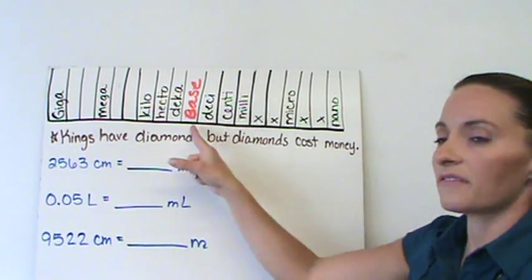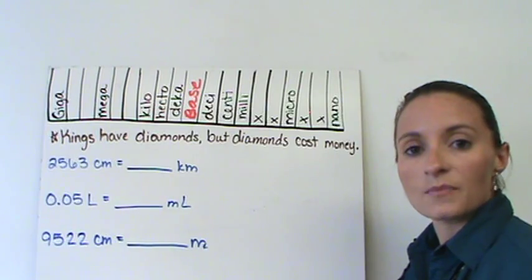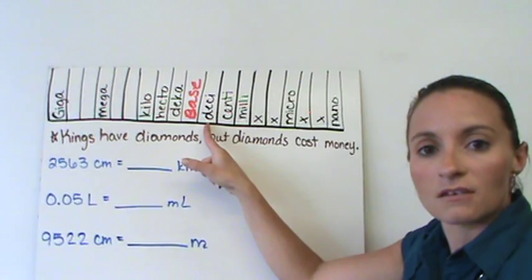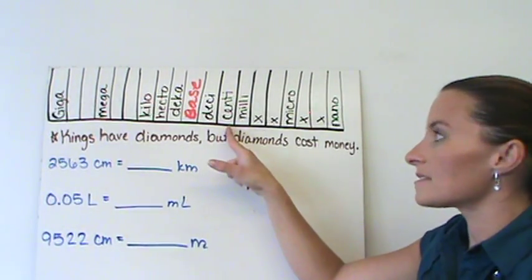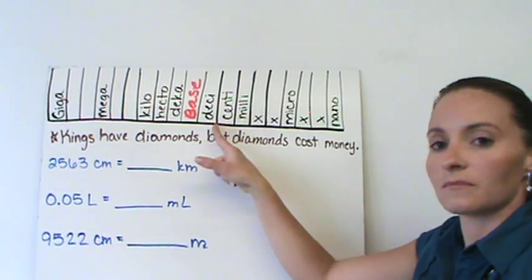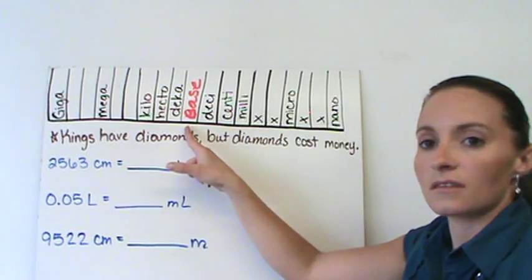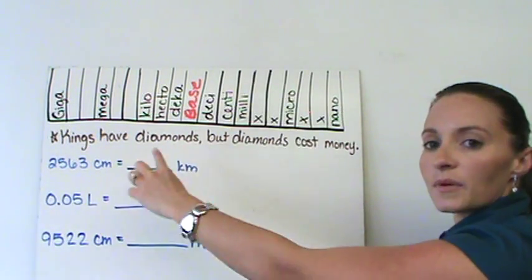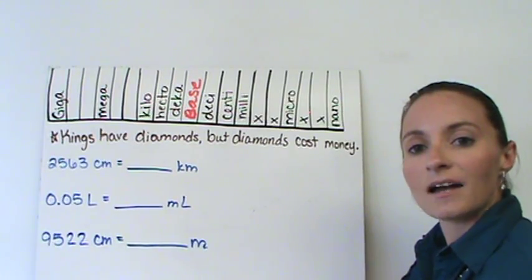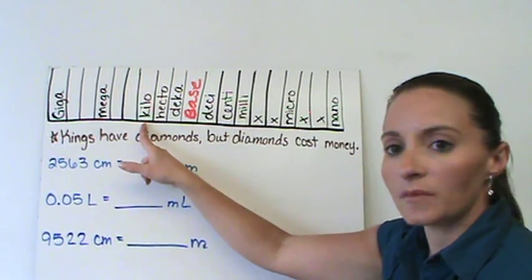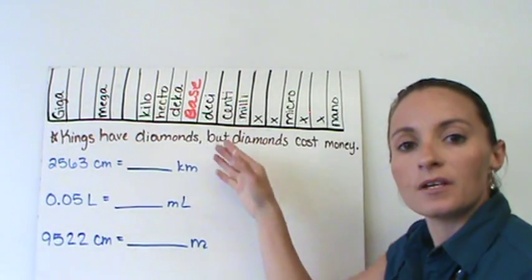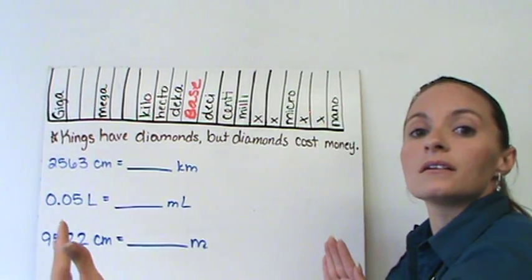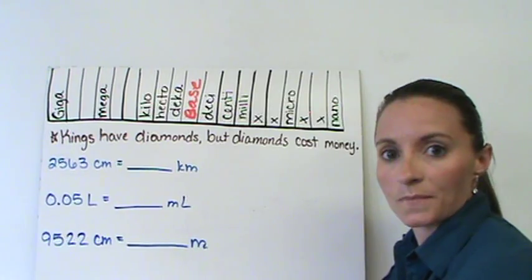As you move away from the base, you get bigger or smaller, depending on what units you're using. A decimeter is one-tenth the size of a meter. A centimeter is one-tenth the size of a decimeter and one-one-hundredth the size of the base. Each time we move, each step we move away from the base, we move ten times bigger or smaller. A kilometer is a thousand times bigger than a meter. The length is bigger, which means the number should be smaller.